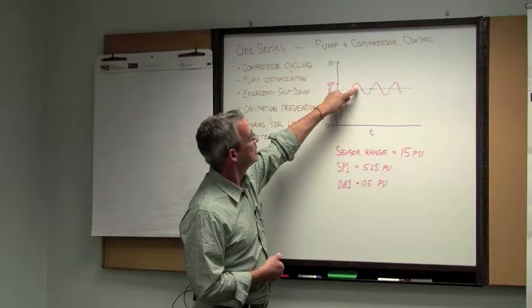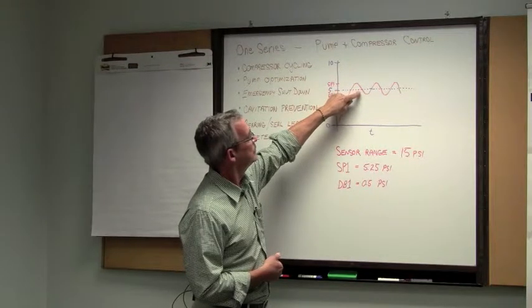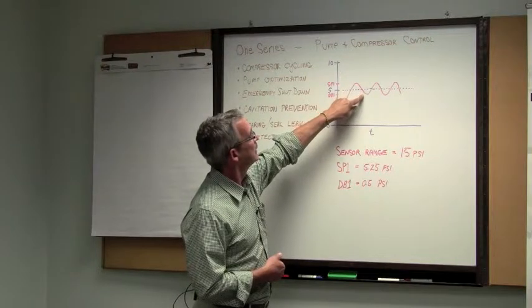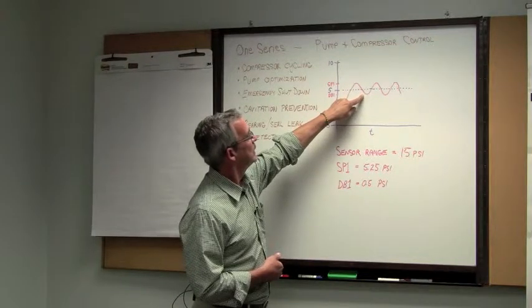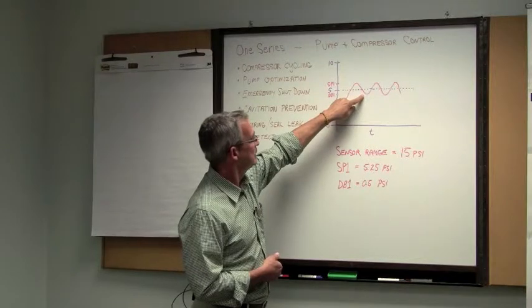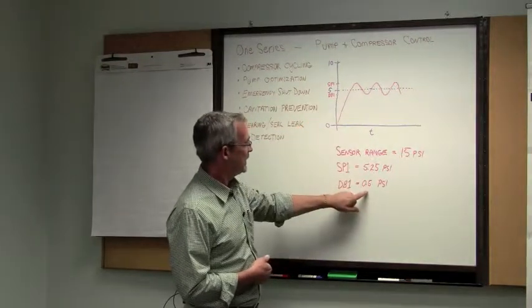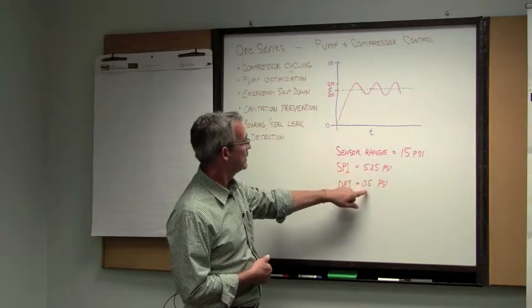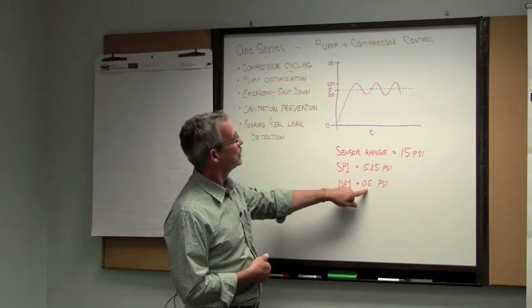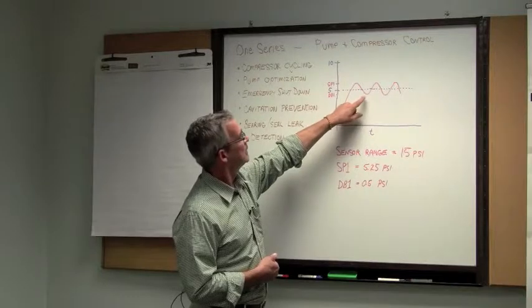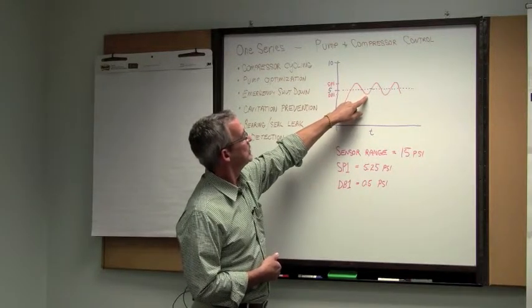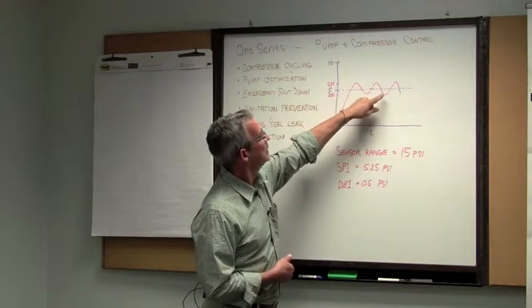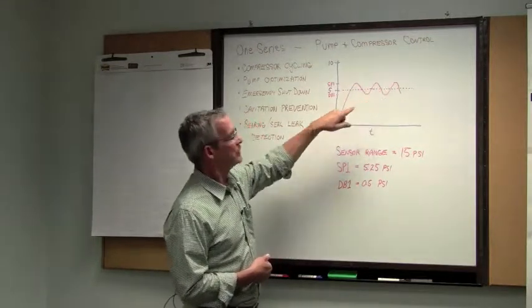The pressure then decays depending on the rate of use of the air in the plant, and it decays to the point where my dead band tells it to turn back on. As you recall, we have a dead band setting of a half a pound. So 5.25 minus 0.5 is 4.75. That point is where my compressor will turn back on. We can maintain this on-off compressor actuation using the One Series.